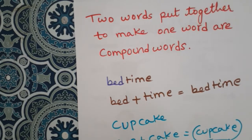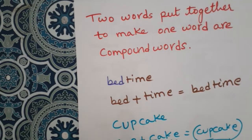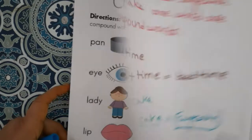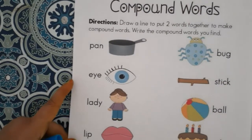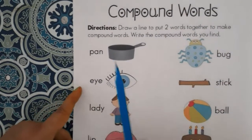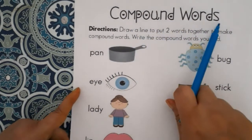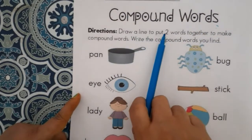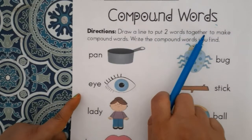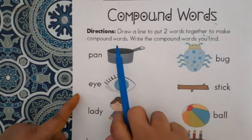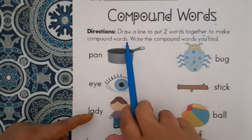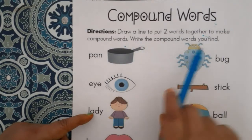Both words are different on their own, but when put together we get one word — cupcake. Let us do a worksheet on compound words. Draw a line to put two words together to make compound words, then write the compound words.